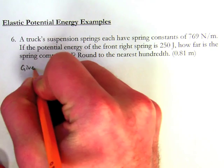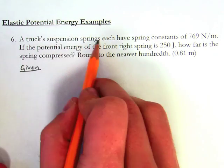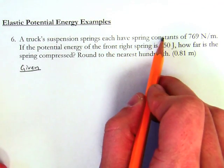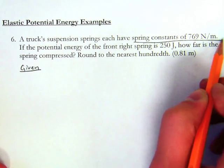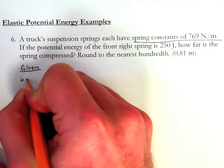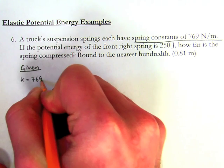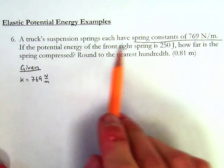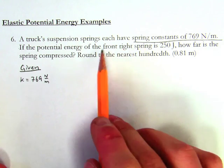A truck's suspension springs each have spring constants of 769 newtons per meter. So my spring constant is 769 newtons per meter. If the potential energy of the front right spring, so just one of the springs, is 250 joules.